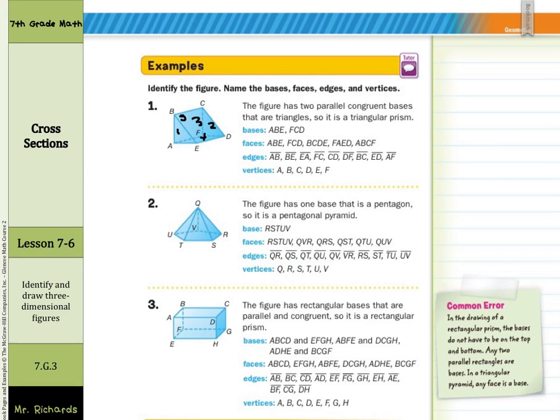So there, we appear to have one, two, three, four, five, six, seven, eight, nine edges. And our vertices might be the easiest one. We have A, B, C, D, E, and F as our vertices.